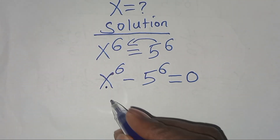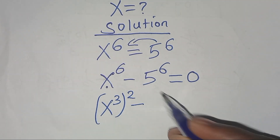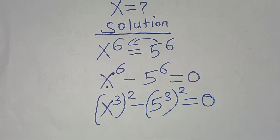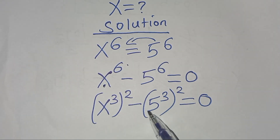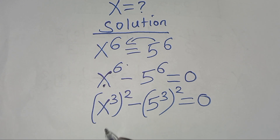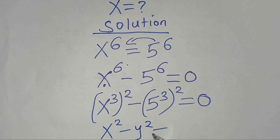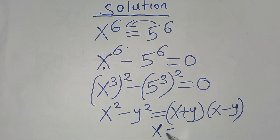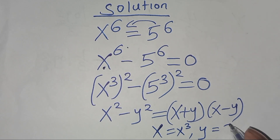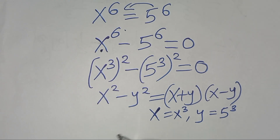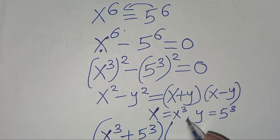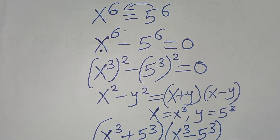We can express x to the power 6 as (x to the power 3) squared, and 5 to the power 6 as (5 to the power 3) squared. This is in the form of x squared minus y squared — the difference of two squares — which can be expressed as (x plus y)(x minus y). So with x equal to x³ and y equal to 5³, substituting gives (x³ plus 5³) multiplied by (x³ minus 5³) equals 0.